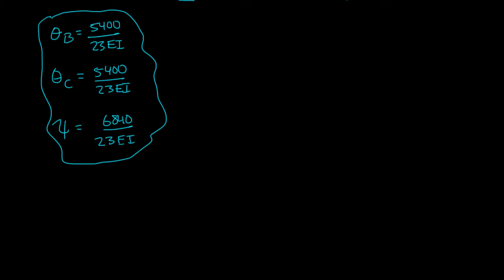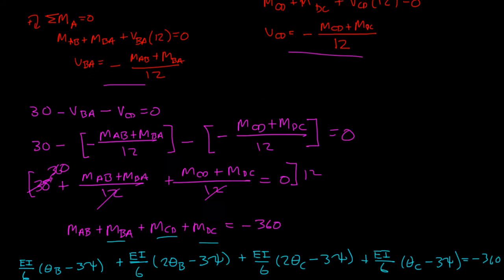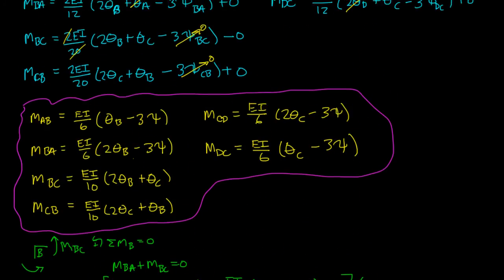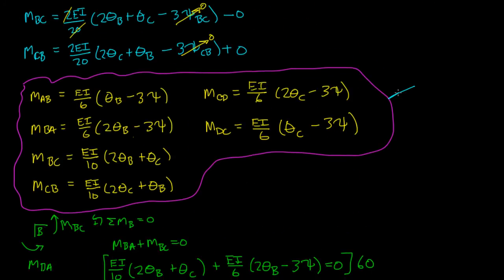What you can now do is take those three values and then plug them into all of these to figure out what MAB, MBA, MBC, MCB, MCD, and MDC are.